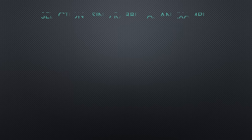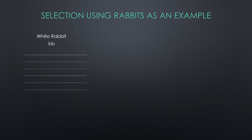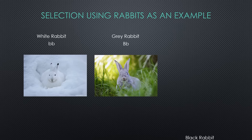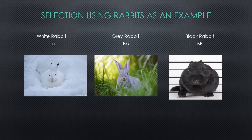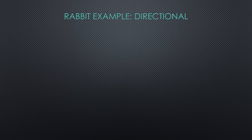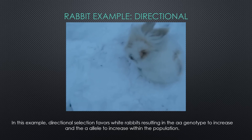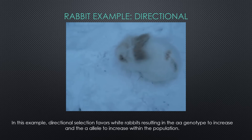Now let's use a population of rabbits to show how these different types of selection work in a real-world example. In this population of Alaskan rabbits there are white rabbits with genotype little b little b, gray rabbits with genotype big B little b, and black rabbits with genotype big B big B. During winter, white rabbits survive better and have higher fitness than the other rabbits because they blend in with the snow. This is an example of directional selection, and the little b little b genotype frequency as well as the little b allele will increase over time.